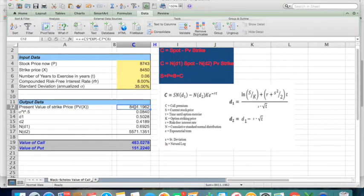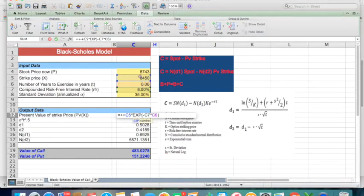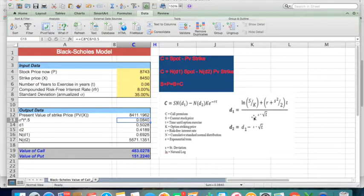Okay, so now here the calculation begins. Here the present value of the strike price is calculated using the strike price, period, and risk-free rate. Then the denominator of d1 is calculated—that is, standard deviation multiplied by root of the time—and now d1.